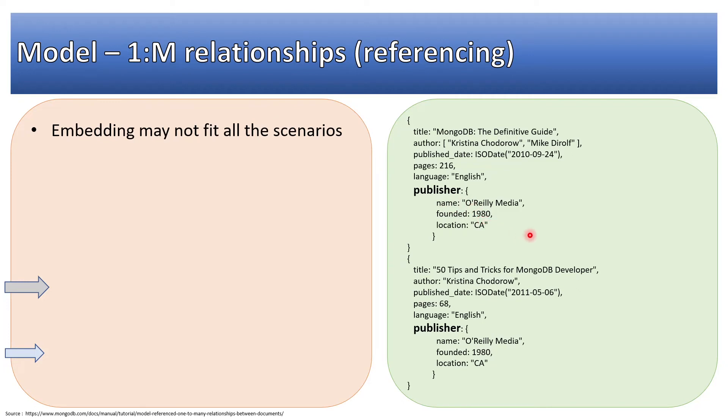thousands of books. Embedding will not be possible in that case also, and moreover that will lead to performance issues in both the scenarios. If we embed publisher information into books information or books information into publisher information, both of these are not feasible in this case.